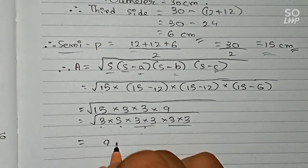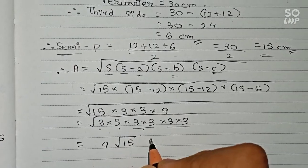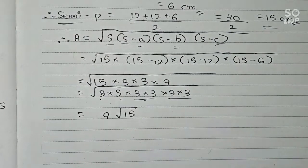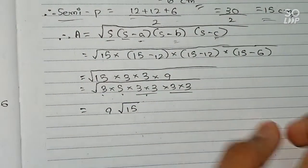So 3 times 5 is 15, so 9 root 15 will come. So now the value of root 15 you have to find out, so let's find this out.